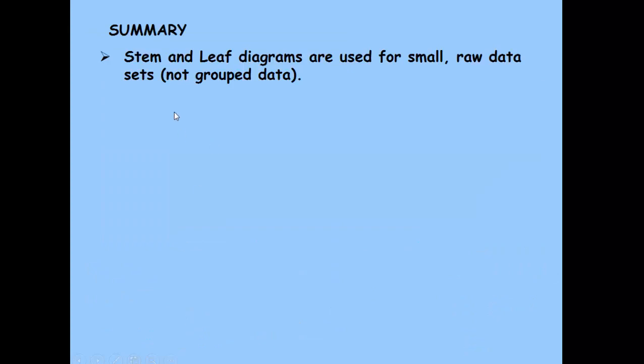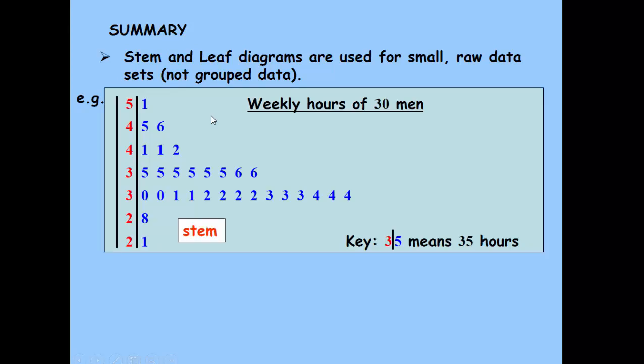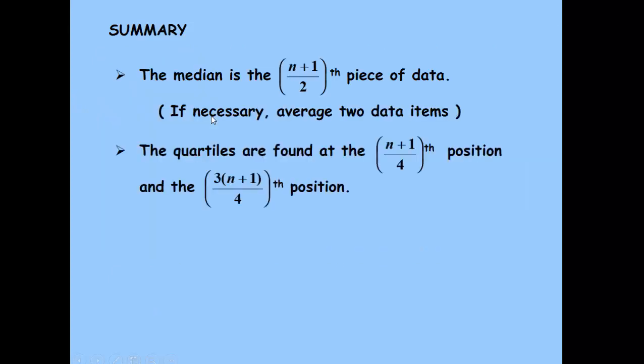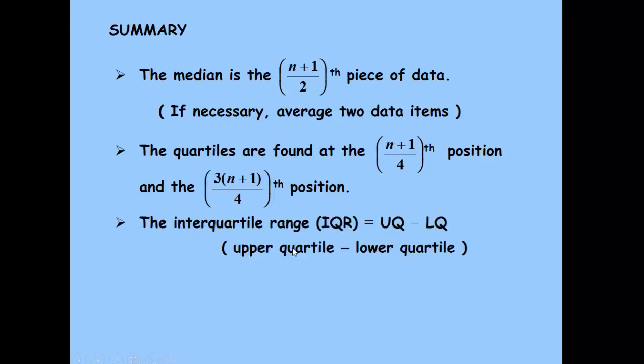To summarize, stem and leaf diagrams are used for small raw data sets. It would be really difficult if it was a big set of raw data, not grouped data. To find the median, we use that formula. For the quartiles, those formulas. That's the interquartile range. And we can interpolate in the way shown to find the lower quartile and the upper quartile.